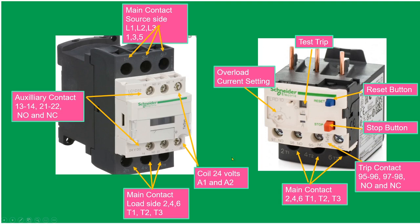This is the coil, 24 volts, A1 and A2. If we put a source here, the plunger will move down, passing current from line one to T2. Next, auxiliary contacts: we have 13 and 14, and 21 and 22. We have normally open and normally closed.